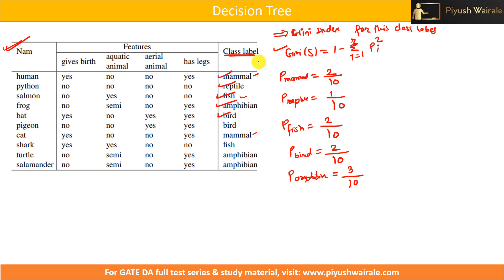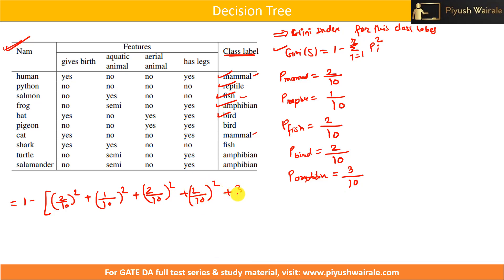Now applying the formula: Gini(S) = 1 minus [(2/10)² + (1/10)² + (2/10)² + (2/10)² + (3/10)²], which equals 1 minus the sum of P(mammal)², P(reptile)², P(fish)², P(bird)², and P(amphibian)² for each class label. Calculating this gives a Gini Index of 0.78. Just apply the formula and calculate the probabilities — that's all there is to it.